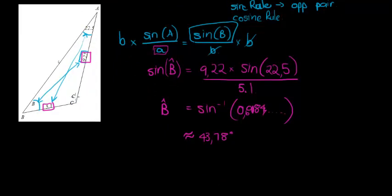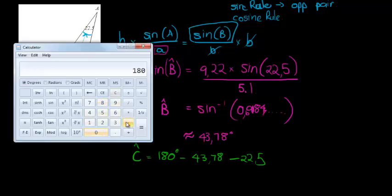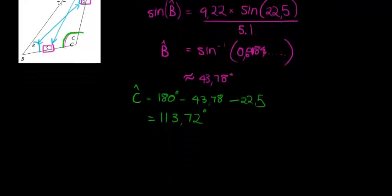Now it's simple to calculate angle C. For angle C, we take 180 degrees and subtract angle B (43.78 degrees) and angle A (22.5 degrees). So 180 minus 43.78 minus 22.5 gives us 113.72 degrees — that's the angle for C.